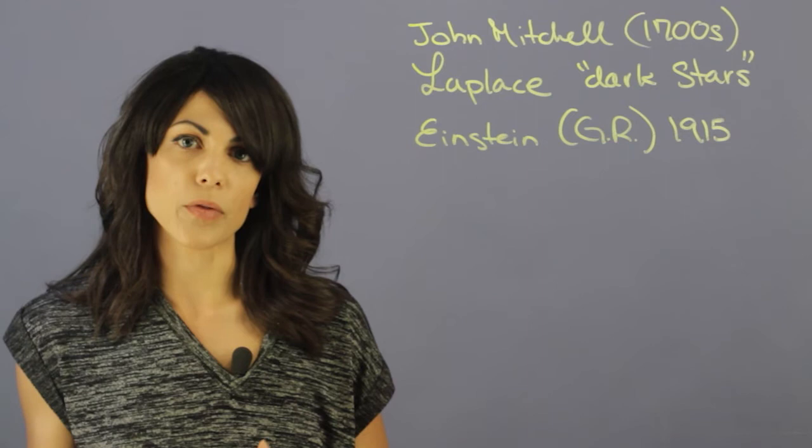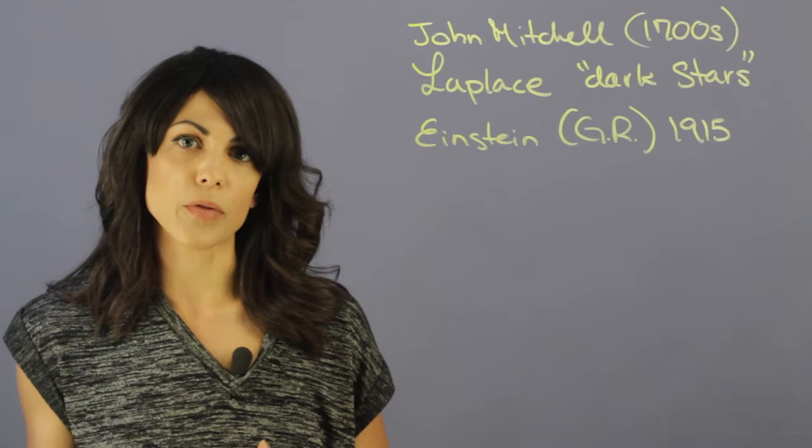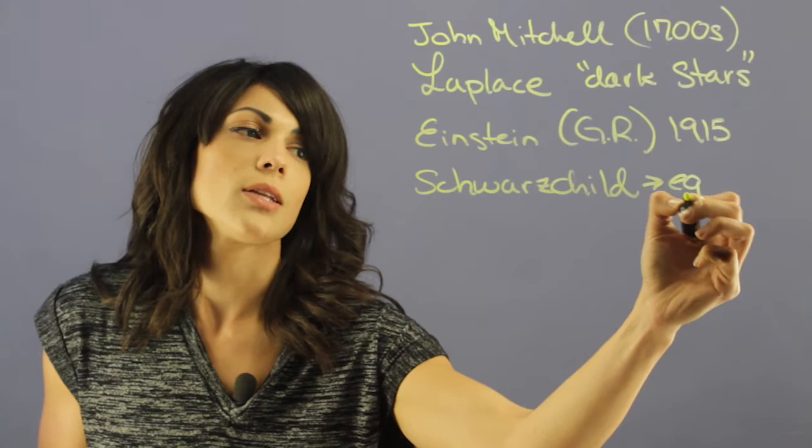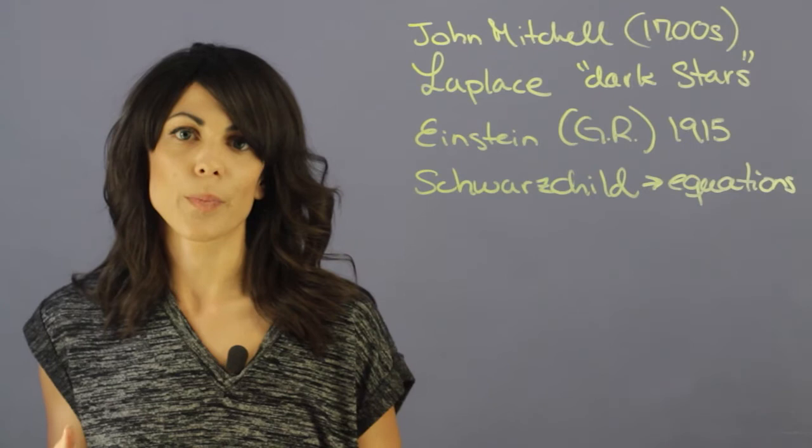So there was a lot of things to follow Einstein's general relativity. And Schwarzschild came up with a lot of equations that describe the black hole. So now we had a better sense of how these things could possibly be described in mathematical terms.